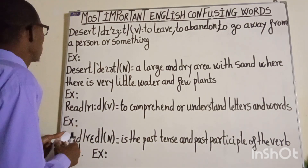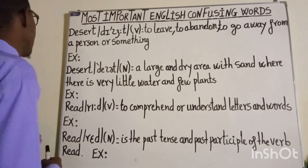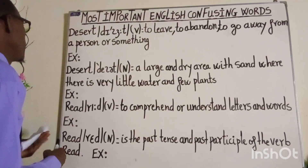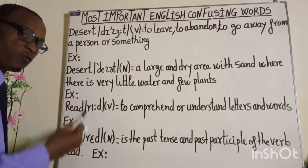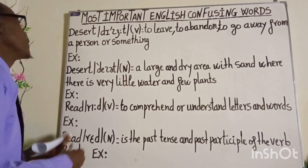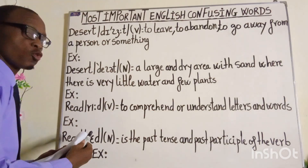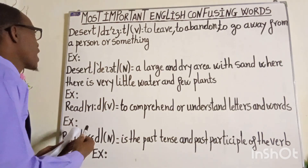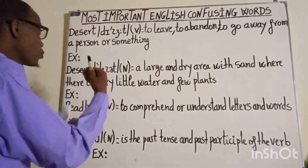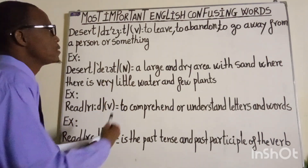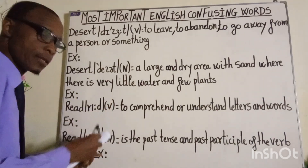The first word, spelled D-E-S-E-R-T, is a verb. It is pronounced as 'desert.' You should exaggerate — repeat after me: desert. It means to leave, to abandon, to go away from a person or something.